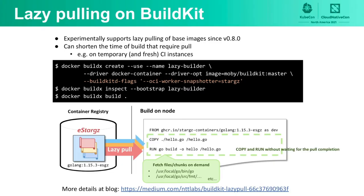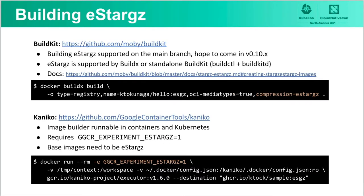BuildKit experimentally supports lazy pulling of eStargz formatted base images since version 0.8.0. In general, every build starts from preparing base images by FROM instructions in a Dockerfile. When you build an image using large base images that aren't cached on the node, they need to be pulled, which can take a long time. This lazy pulling feature tries to solve it. You can use this feature via Docker BuildX. Builds run without waiting for the pull completion of the FROM instruction; necessary files or chunks of the image are pulled on-demand during COPY and RUN instructions.